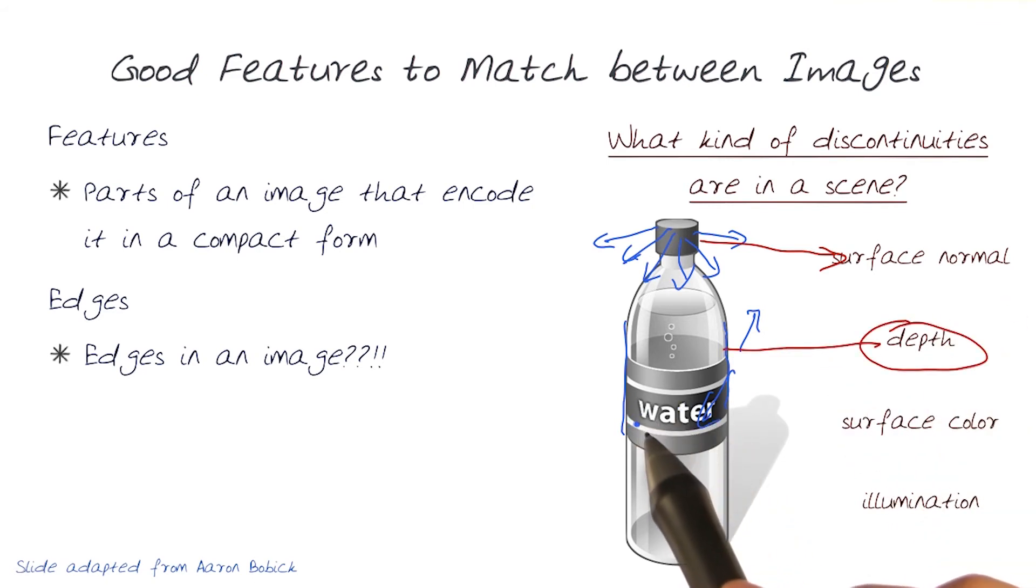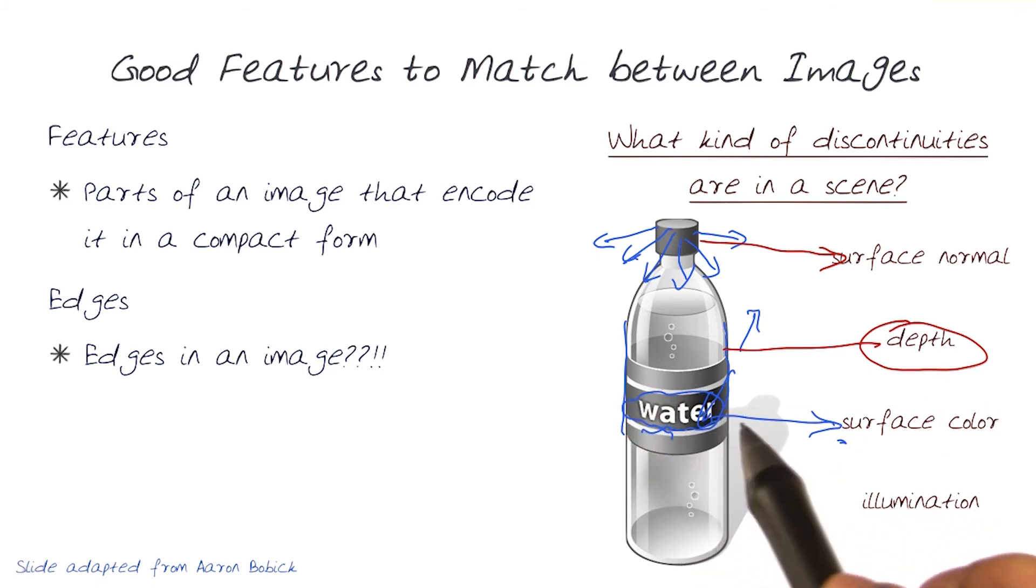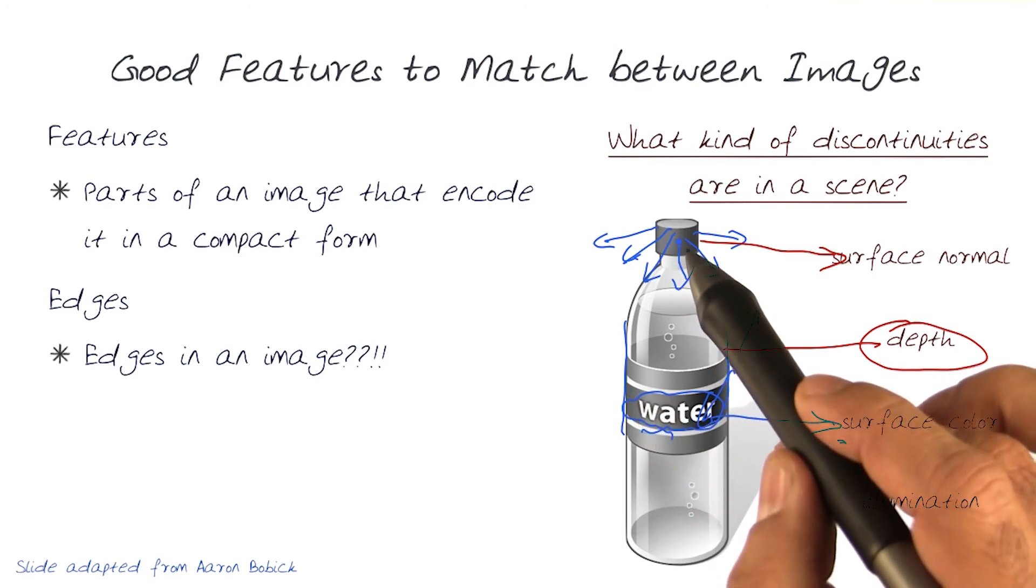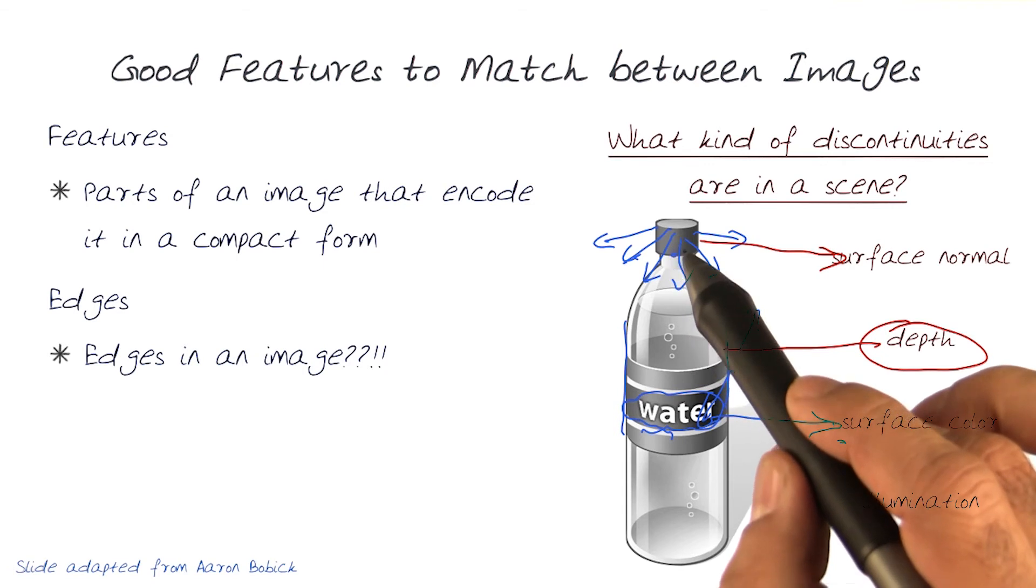How can we look at the term water here and be able to separate it out? Well, if you can notice, water is written with a different color than the background. So surface color is also a cue, a discontinuity that we can look at, that points out how we can separate out terms like water or even this band here, or even the difference between the bottle and the cap.